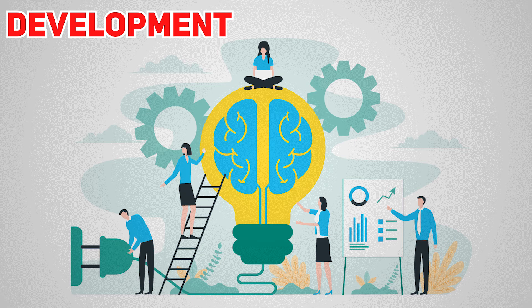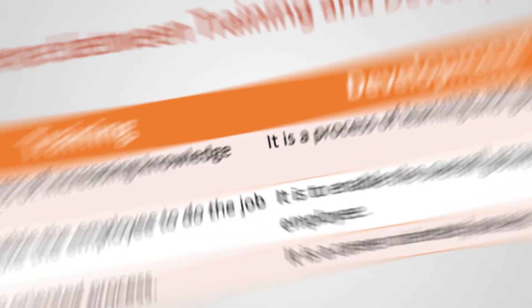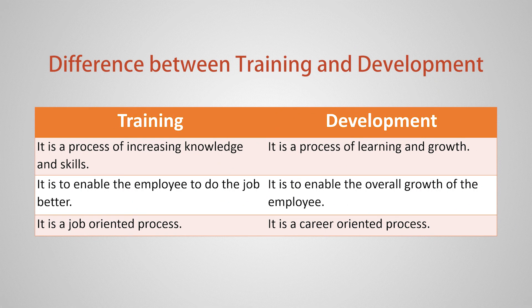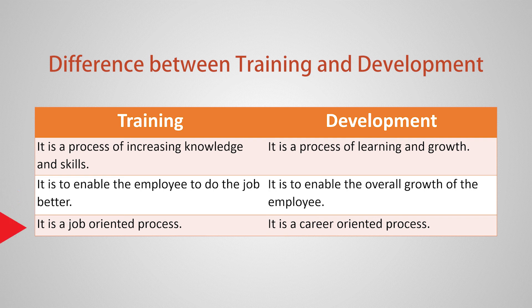Now let's differentiate training and development using two columns. Training is a process of increasing knowledge and skill, while development is a process of learning and growth. Training enables employees to do their current job better, while development enables overall growth of the employee. Training is a job-oriented process, whereas development is a career-oriented process.